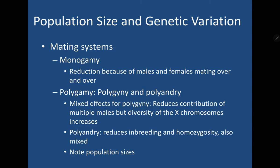Mating systems also affect genetic diversity. Recalling the types: monogamy involves a one-to-one male-to-female mating pair for life. In monogamy, there's a reduction in genetic variation because it's the same male and female mating over and over again — the stock of genes is the same for the parents. If there are enough monogamous pairs in a large population this shouldn't be a problem, but smaller populations will have lower genetic variation, especially with monogamy, because you don't mix the genes as much.